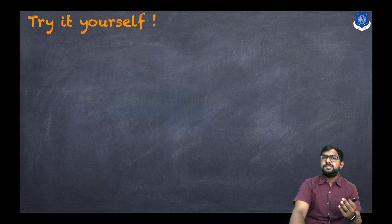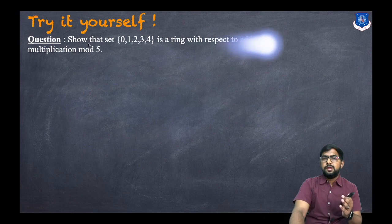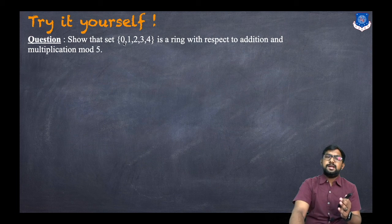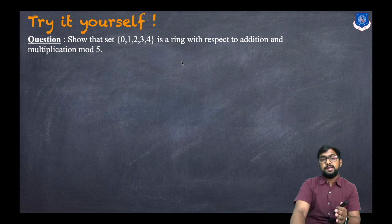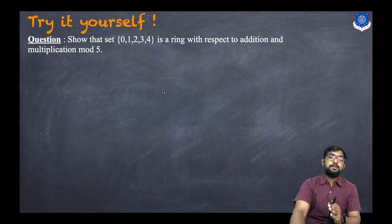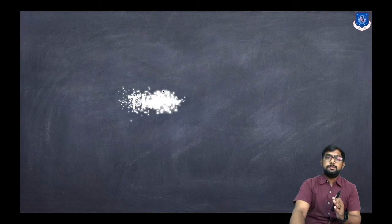Now try it yourself: show that the set {0, 1, 2, 3, 4} is a ring with respect to addition and multiplication modulo 5. Thank you.